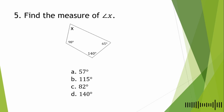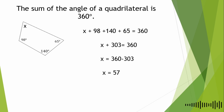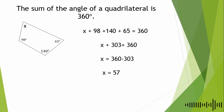Next question: find the measure of Angle x. A. 57°, B. 115°, C. 82°, D. 140°. The sum of the angles of a quadrilateral is 360°. So we have x + 98 + 140 + 65 = 360. Adding the known angles: x + 303 = 360, so x = 360 − 303 = 57°. The answer is letter A.